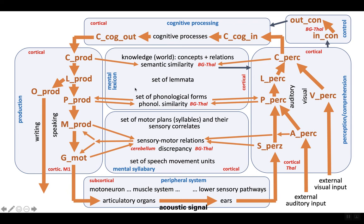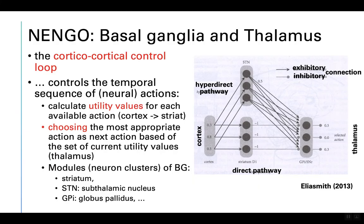What I have not yet discussed is the control loop. We have to control all the neural processes — there is no information about how neural processes are sequenced with each other; this is done by the control module. The cortical control loop controlling the neural processes is mainly a model of the basal ganglia and thalamus. It controls the temporal sequence of neural actions.